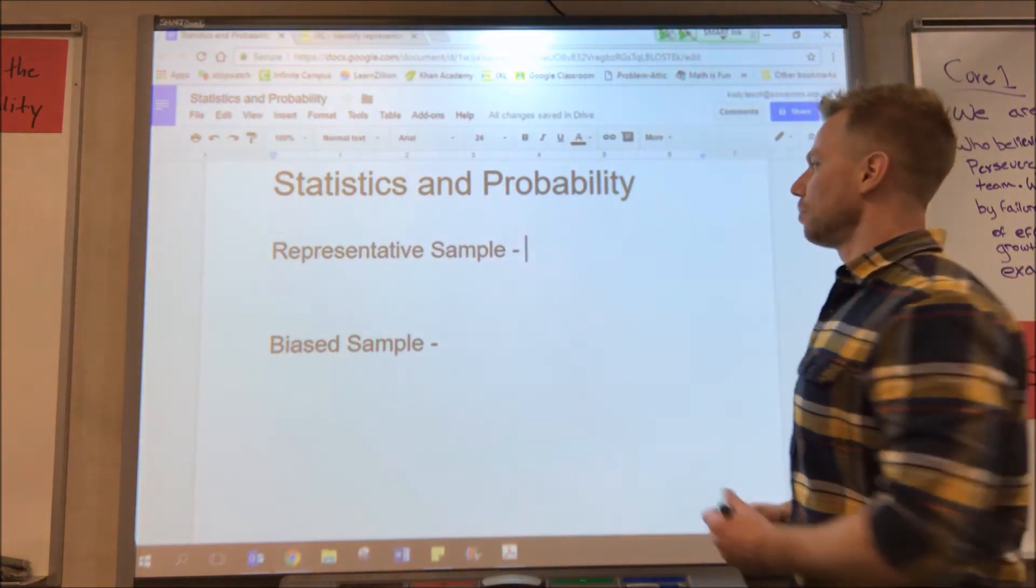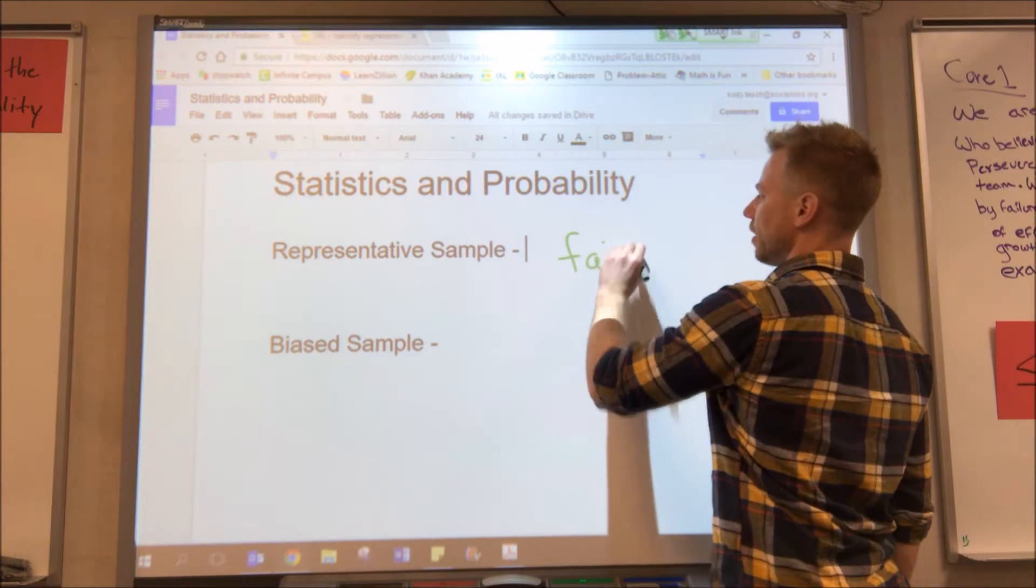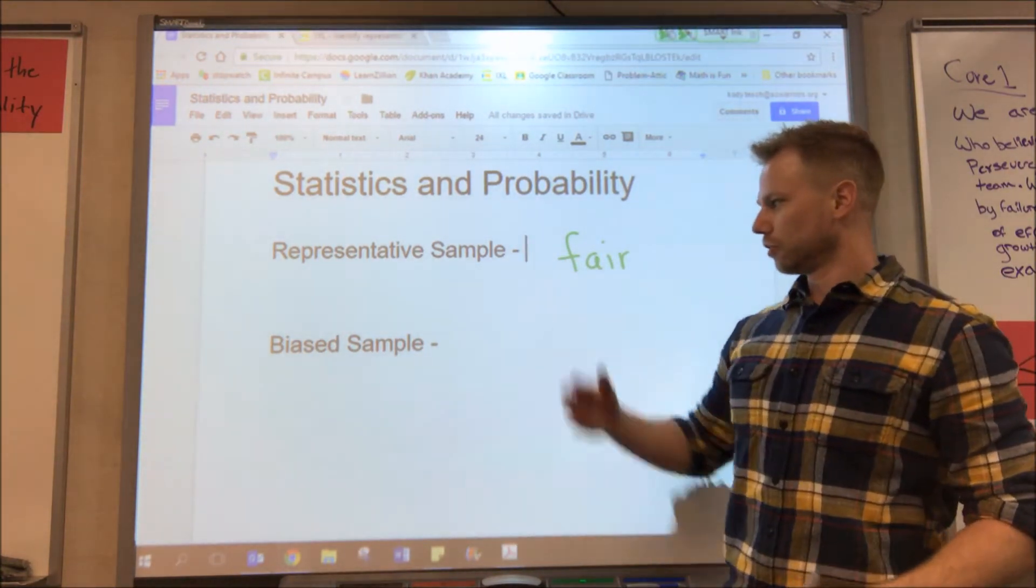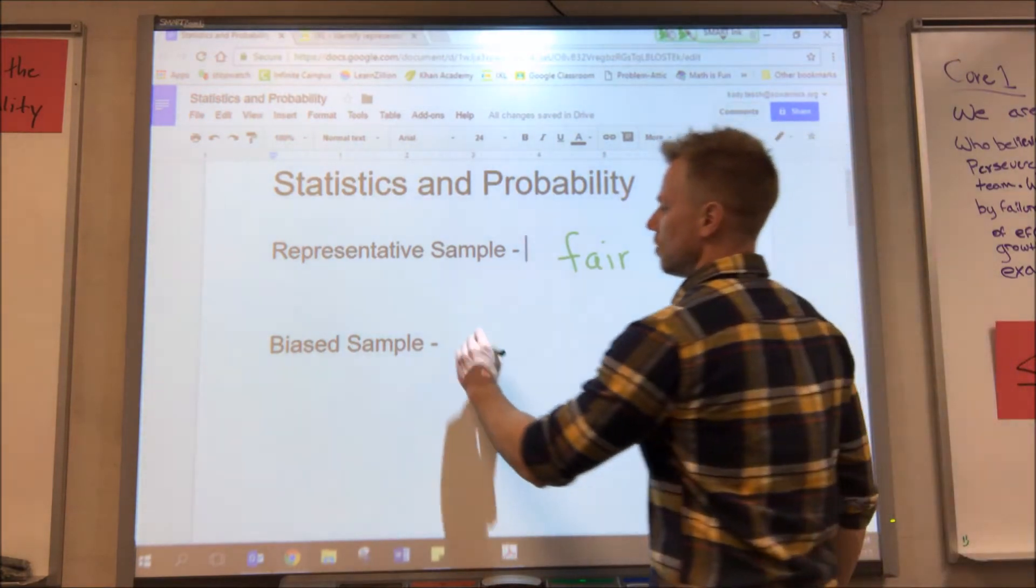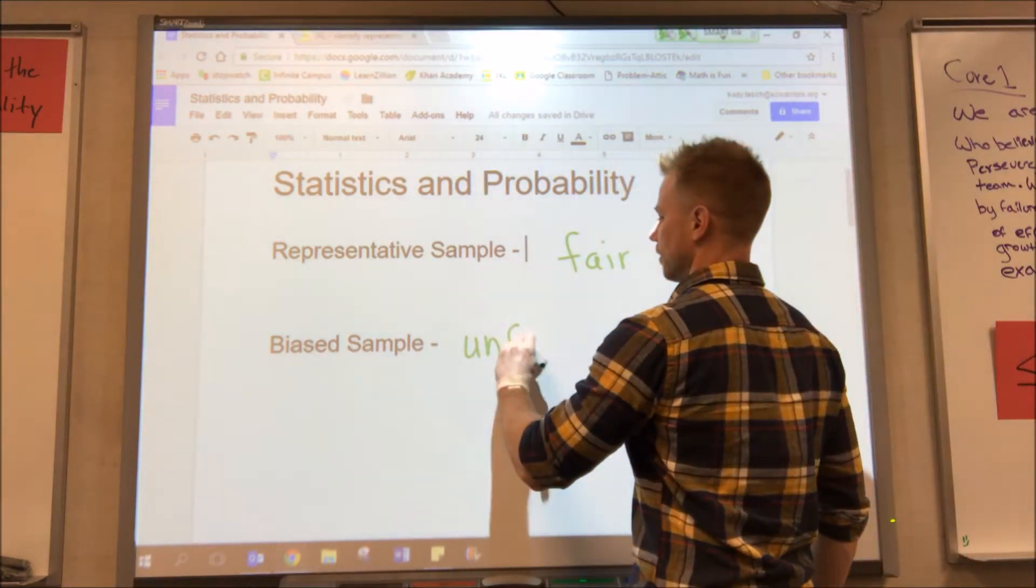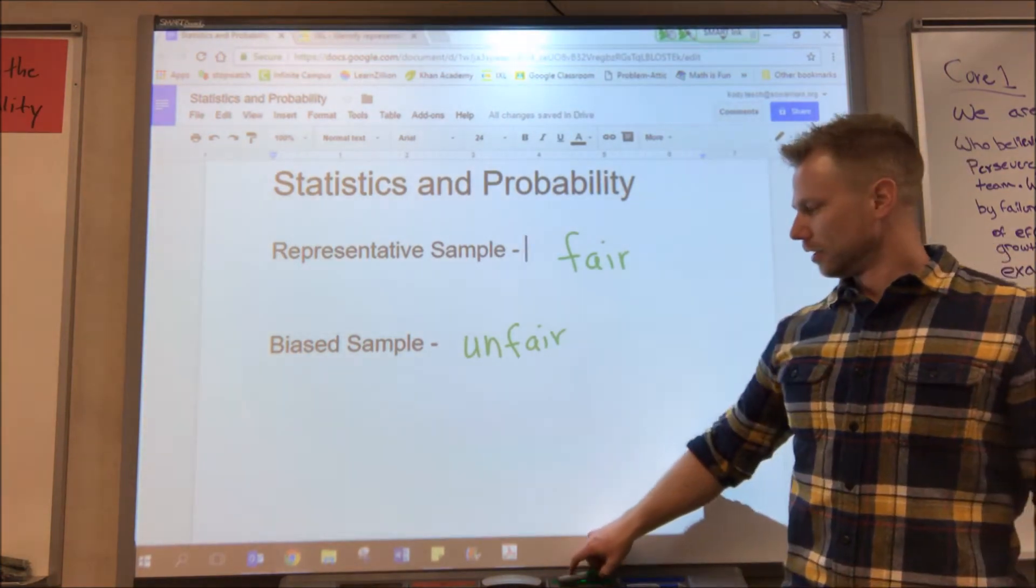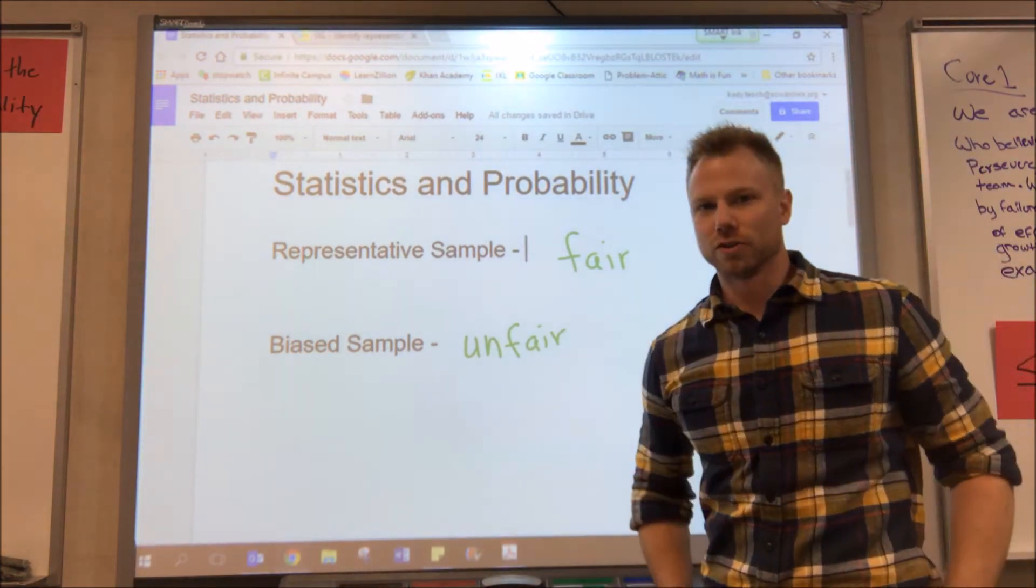Representative sampling basically means that it's fair. Everyone has an equal chance to be asked and to contribute. Biased sampling would be unfair, where not everyone has an equal chance or some people are favored over others.